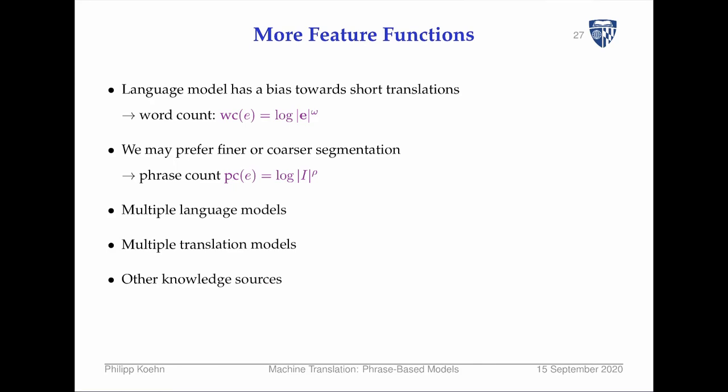More feature functions: the language model has a bias towards short translations. Why? Fewer words in a sentence means fewer probabilities multiplied together. So we also have a word count feature that counts how many words we produce — just the length of the sentence — and depending on which weight we give this feature, we prefer longer or shorter sentences.